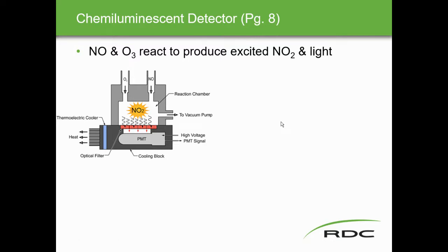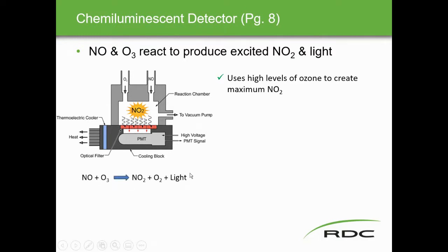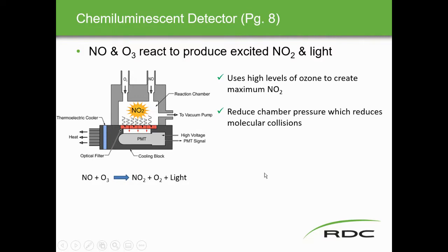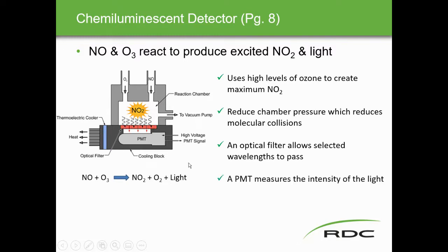Nitric oxide and ozone react to produce excited NO2 and light. The emitted light is picked up by the photomultiplying tube. High levels of ozone are used to create maximum NO2. The reaction: NO + O3 → NO2 + O2 + light. The reaction chamber operates under reduced pressure — a small vacuum — to reduce molecular collisions. An optical filter allows select wavelengths to pass, and the photomultiplying tube measures light intensity. That intensity corresponds to the concentration of NO2.